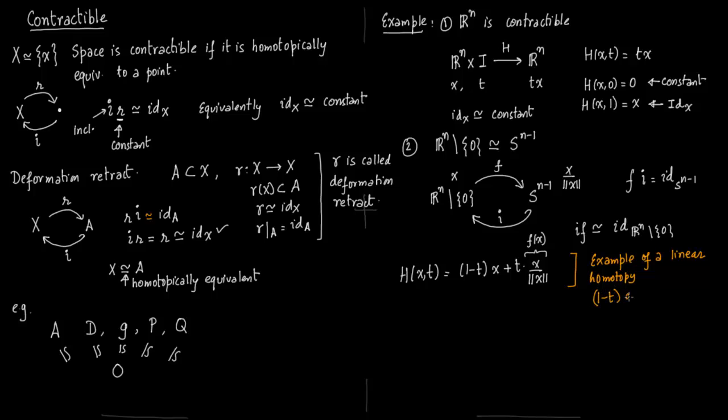So this is an example of a linear homotopy. Linear homotopies are of the form (1-t)G(X) + t times F(X).